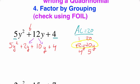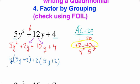Now we're going to factor by grouping. Factor by grouping says we take the GCF of the first two terms — in this case it is y — giving us y times the binomial 5y plus 2. Then we find the GCF of the last two terms, which is positive 2 times the quantity 5y plus 2. Then we rewrite this as the product of binomials: y plus 2 times the quantity 5y plus 2.